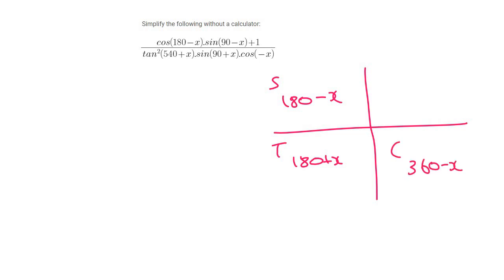So for the first one, I look at the angle first, 180 minus x. So that's over here, but that's where cos would be negative. So I'd say negative cos x.